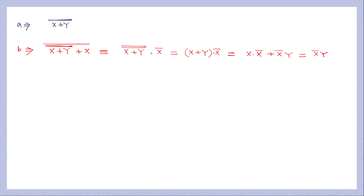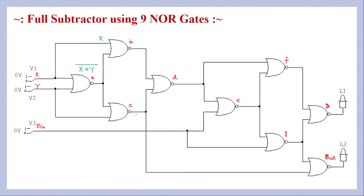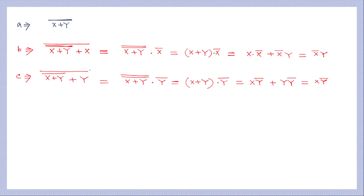For the third NOR gate at point C, the inputs are (X NOR Y) and Y. Applying De Morgan's law: (X + Y)̅ gains another complement, then AND with Y̅. Since Y·Y̅ = 0, those terms cancel, and the simplified output at point C is XY̅.